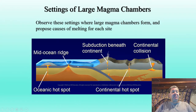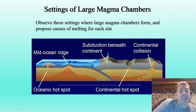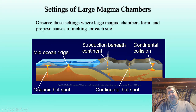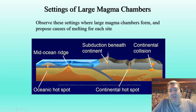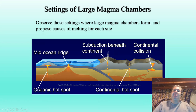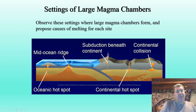To summarize the tectonic settings: oceanic hot spots, mid-ocean ridges with decompression melting, subduction zones where adding water to the plate causes melting, continental hot spots riding underneath continents, and continental collisions can all cause melting. I hope you enjoyed this presentation — have a good day.